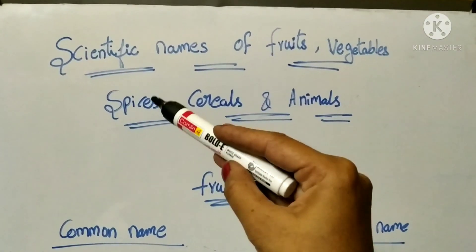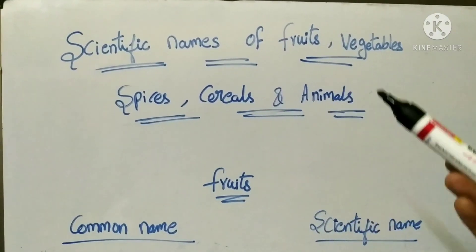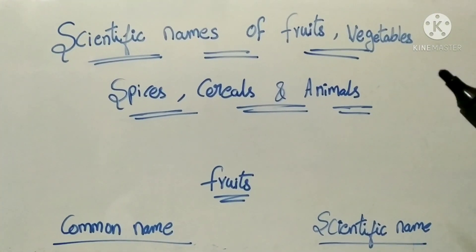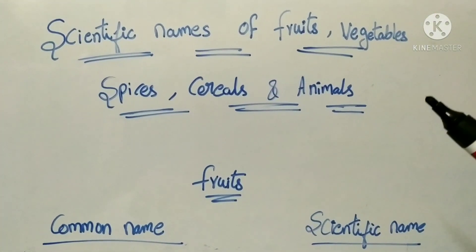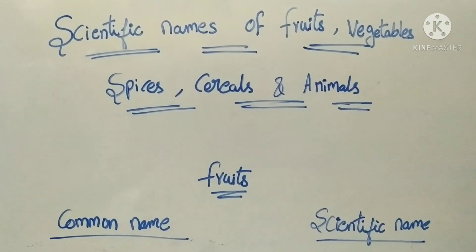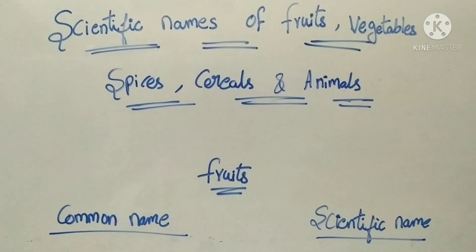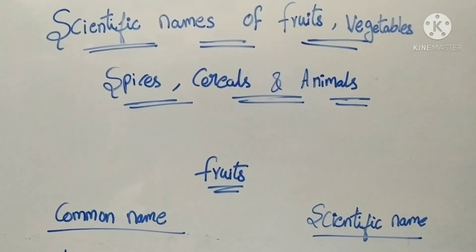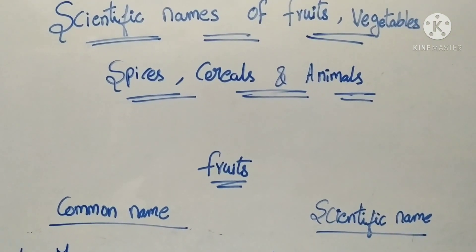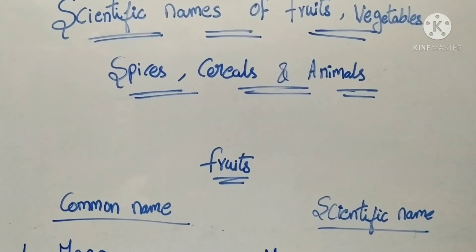This topic is scientific names of fruits, vegetables, spices, cereals, and animals. Vegetables, fruits, cereals, spices, animals — their scientific names, I will discuss in this video. This video is very important because in every competitive exam, questions depend on scientific names. So this topic is important.